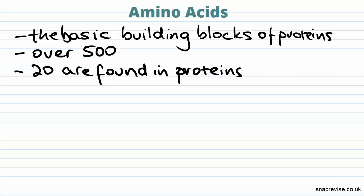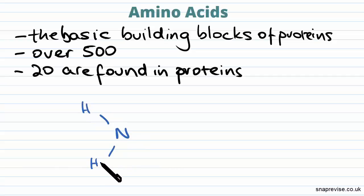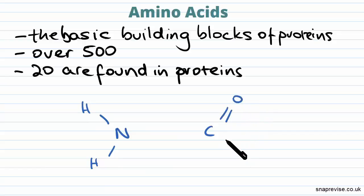It's really important to know the structure of an amino acid, and there's no better way of learning it than practicing drawing it out, so that's what we're going to do here. Amino acids, as the name suggests, contain an amino group, which is an NH2 group, and also a carboxylic acid group, which is a carbon double bonded to an oxygen, and also an OH group.